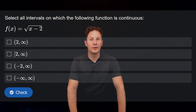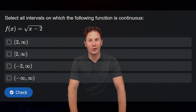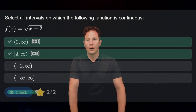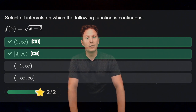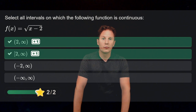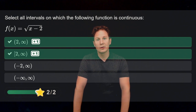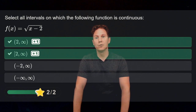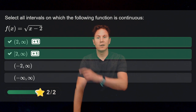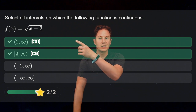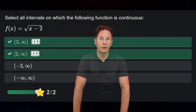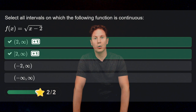Select all intervals on which the following function is continuous, where f of x equals the square root of x minus two. The square root of x minus two is defined for all x for which x minus two is greater than or equal to zero, meaning x must be greater than or equal to two. The second interval exactly corresponds to that possibility, and the first interval is just a sub-interval of the second one, so that also is an interval of continuity.